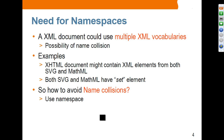For example, an XHTML document might contain XML elements from both SVG and MathML. Both SVG and MathML have a set element, and the set element used in SVG is semantically different from a set in MathML. So there is a possibility of name collision, and we need to avoid this through the use of namespace.